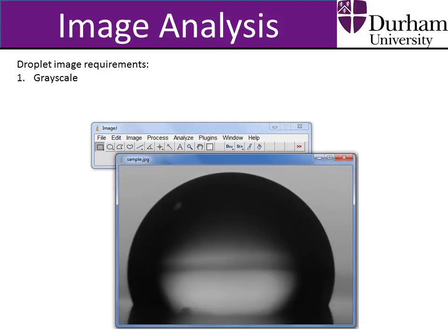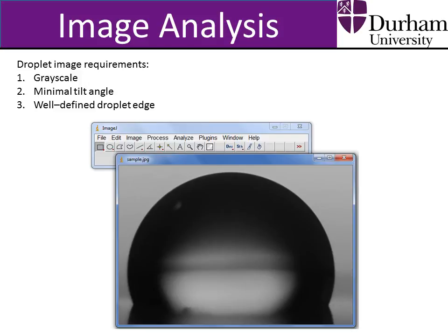Secondly, the sample surface must be as close to the horizontal plane as possible, so it must have a minimal tilt angle. Finally, the image must have a well-defined droplet edge in order for the Drop Analysis plugin to calculate the static contact angle. Another point to note is that droplet images taken with the smartphone lens attachment often require magnification to a similar size to the sample image in order to aid in ease of the static contact angle measurement. This can be done using the magnification tool.